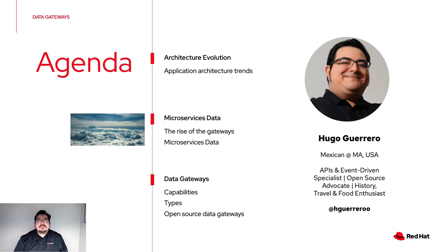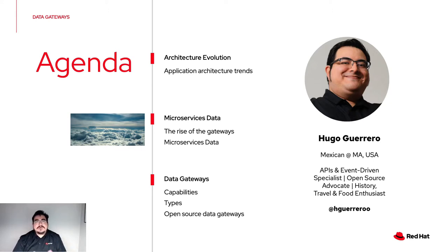My name is Hugo. I'm Mexican, currently based in the Boston area in Massachusetts. I'm working with Red Hat as an API and messaging/event-driven specialist. I've also been an open source advocate since I first started working with the JBoss Enterprise Application Server around 2004, so it has been a long journey. I'm also a history and travel enthusiast — I really enjoy traveling and discovering new food and street food around the world. Here's my Twitter handle if you want to follow the conversation.